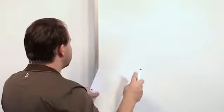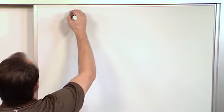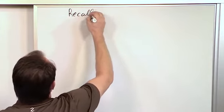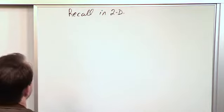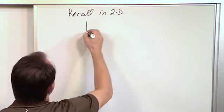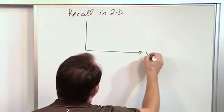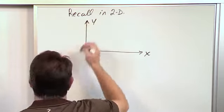Alright, so to begin that journey, let's review very quickly what we learned in two dimensions. So recall, and I'm not going to spend too much time on this, but I want to just really quickly draw something on the board. Recall in two dimensions we said, okay, you have the x-axis here and you have the y-axis here.